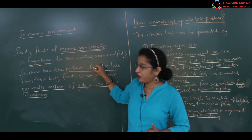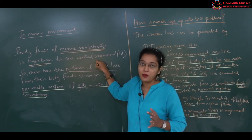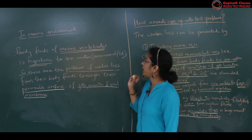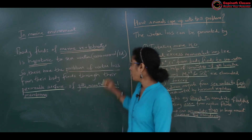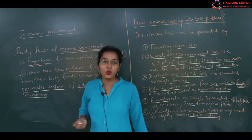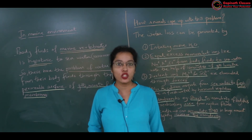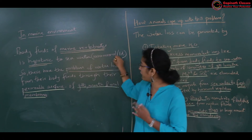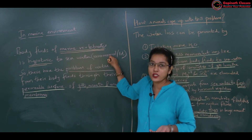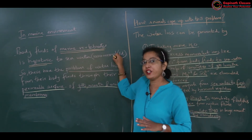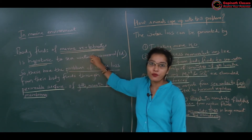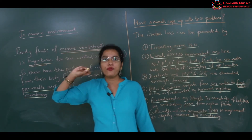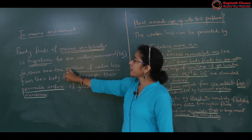Marine habitat means seawater, which is salty — more solutes are present. The osmolarity of seawater is 1000 milliOsmol per liter, while body fluid osmolarity in marine vertebrates is about 300 milliOsmol per liter. This is a very big difference. So seawater is hypertonic to the body fluids of marine vertebrates, meaning the marine vertebrate's body fluid is hypotonic.